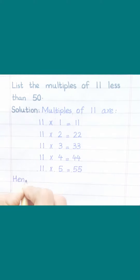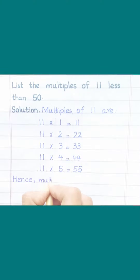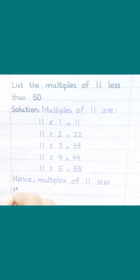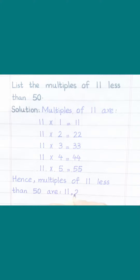Hence, multiples of 11 less than 50 are: 11, 22, 33, 44.